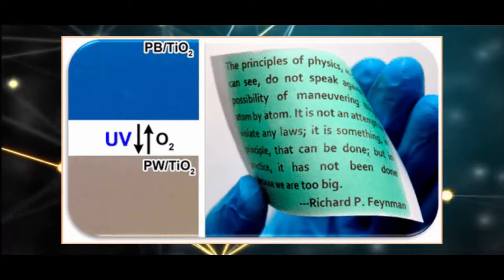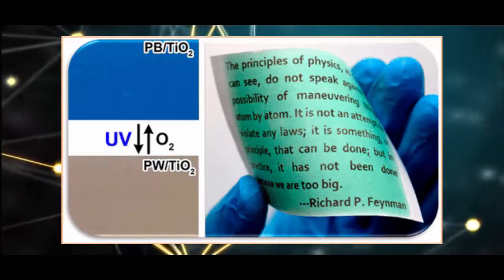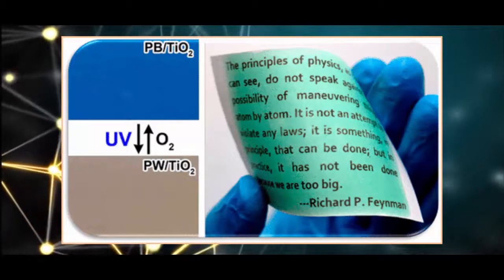Scientists have developed a special nanoparticle coating that's easy to apply to normal paper and changes color when ultraviolet light shines on it.